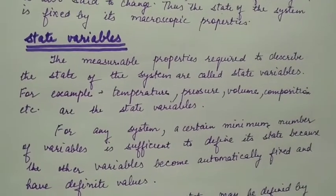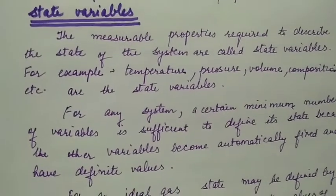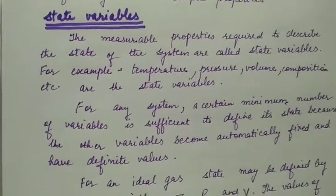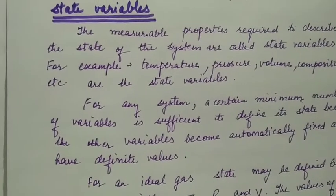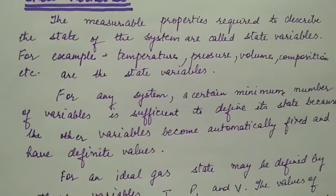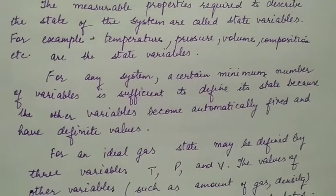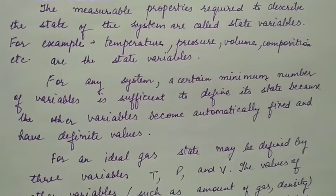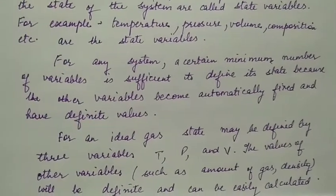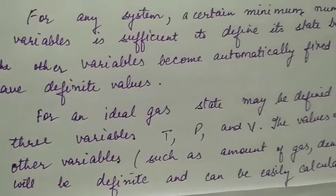The measurable properties required to describe the state of a system are called state variables. For example, to maintain the solid state of water as ice, you need temperature at zero degree centigrade. If you change the temperature by heating it to say ten degree centigrade, then temperature, pressure, volume, composition - these are state variables. For any system, if you have fixed a certain minimum number of variables, then its state will also be fixed. For any system, a certain minimum number of variables is sufficient to define the state, because other variables automatically become fixed and have definite values.